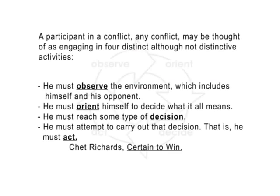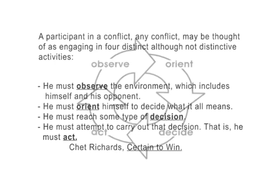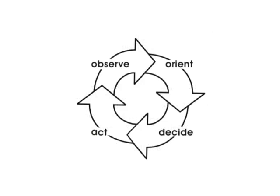On the surface, the OODA Loop appears to be a single, feed-forward loop. Individuals observe their environment, orient themselves to a task, reach a decision, and then act on that decision. This cycle will then repeat itself. Here's an example of an OODA Loop in action.